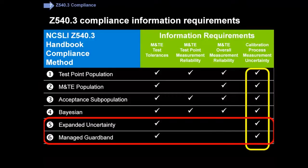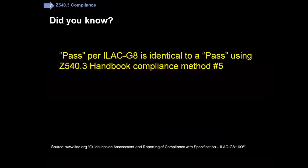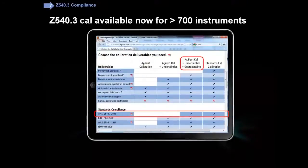At Agilent, the two methods we like to use for meeting Z540.3 are either Method 5 or Method 6. Now, people familiar with ILAC G8 may never have thought about it this way — when we were talking about ILAC G8 and using the Expanded Uncertainty as a guard band, that is what you need for a clean pass using ILAC G8, and it turns out that is identical to Z540.3 Method 5. So Agilent Cal plus uncertainties plus guard banding meets Z540.3 using Method 5.